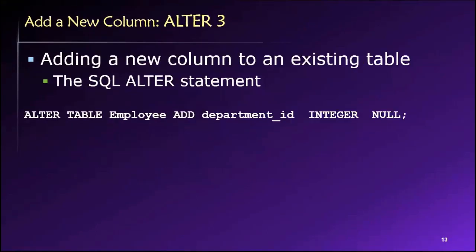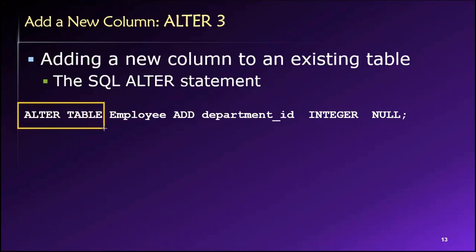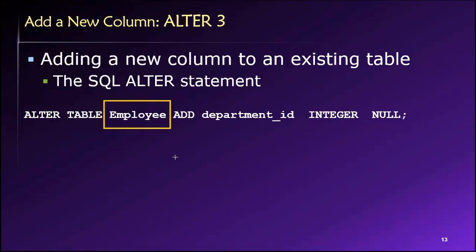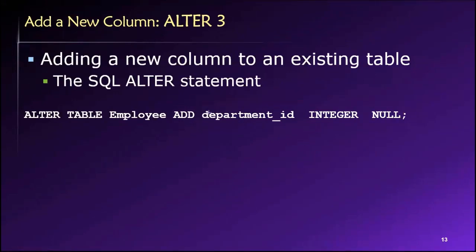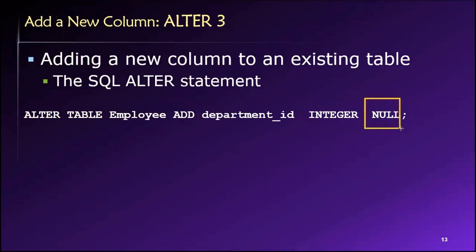What if we want to add a new column to a table rather than a new constraint like a primary key? Well, if we want to do that, all we have to do is again use our ALTER TABLE statement. We then specify the name of the table whose structure we want to alter. Then, what do we want to do? We're going to add a new column. So we provide those three pieces of information required to define a new column: the name of the column, its data type, and whether or not null values are allowed.